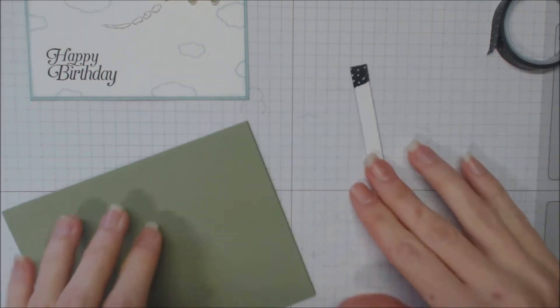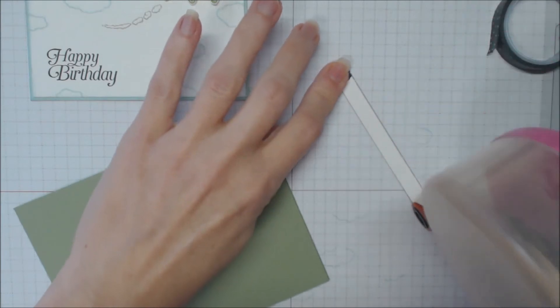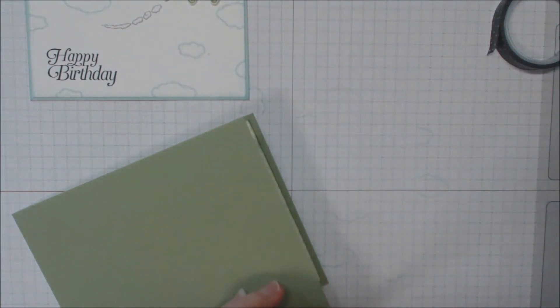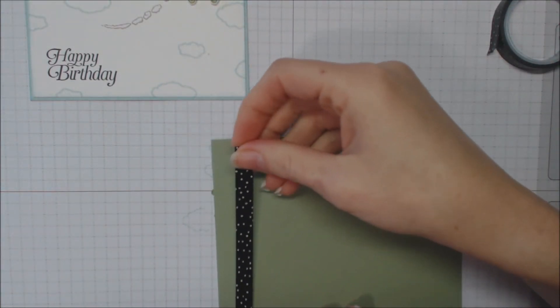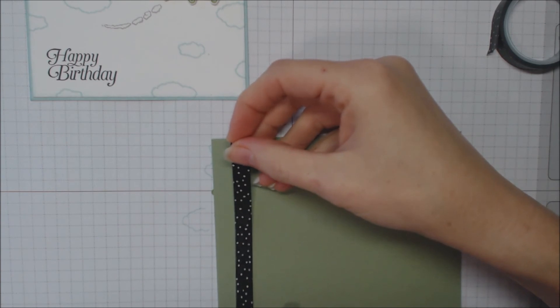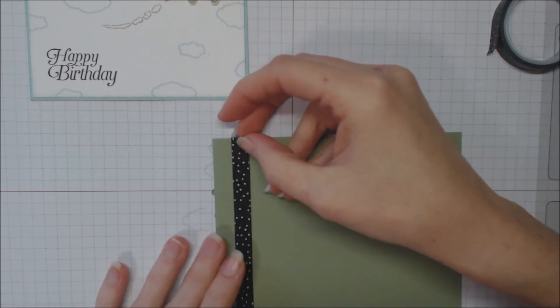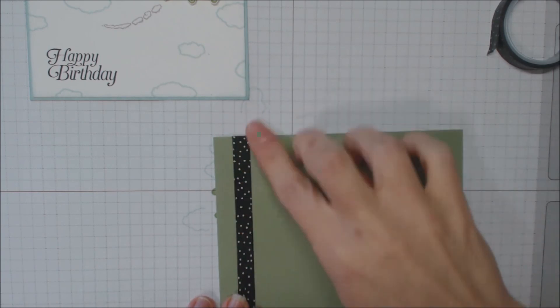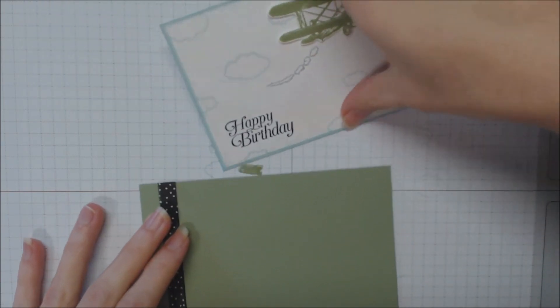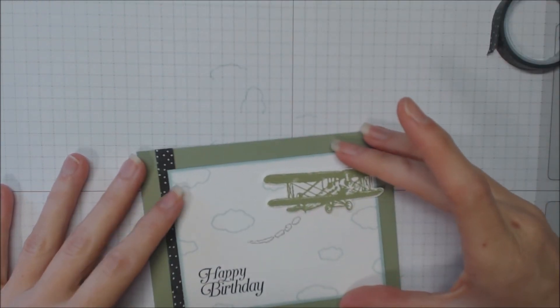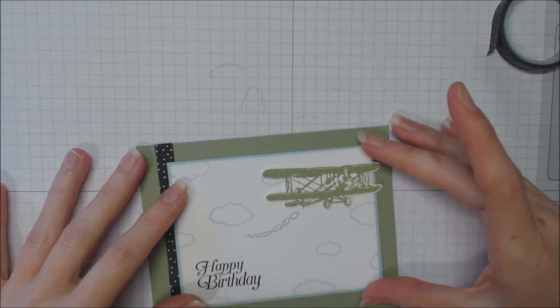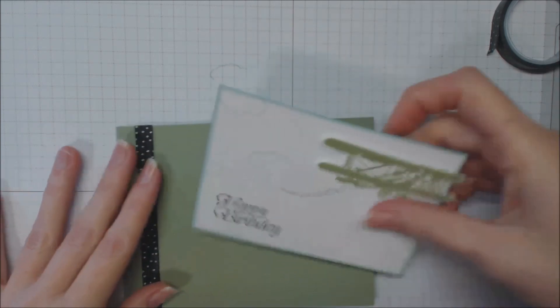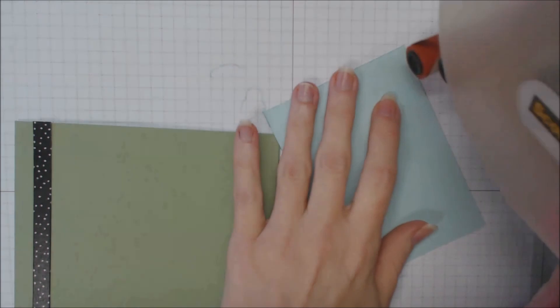I'm going to take this Designer Series washi tape. I'm going to put this over on the left side about half an inch or so. And then it's up to you if you want to pop this up on some dimensionals or lay it flat. Because I put the airplane on dimensionals I'm going to go ahead and lay that flat.